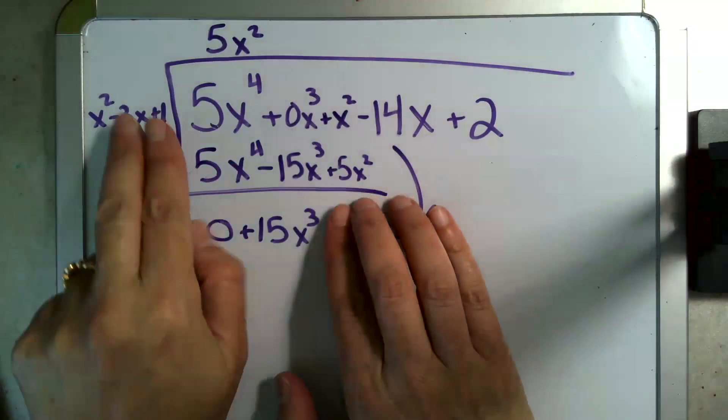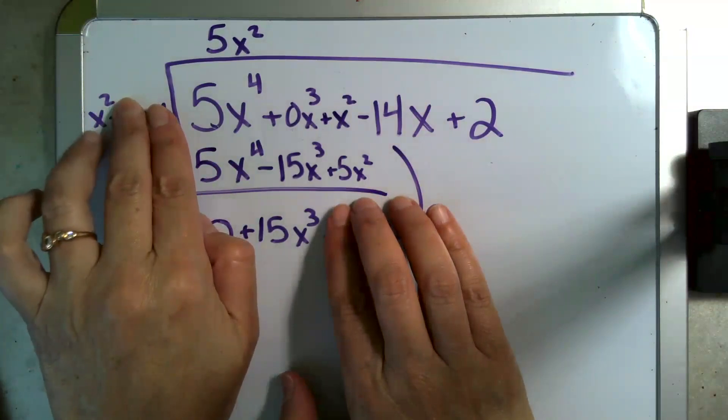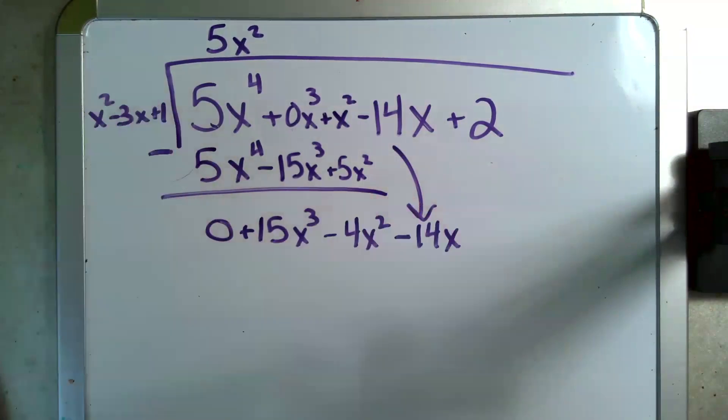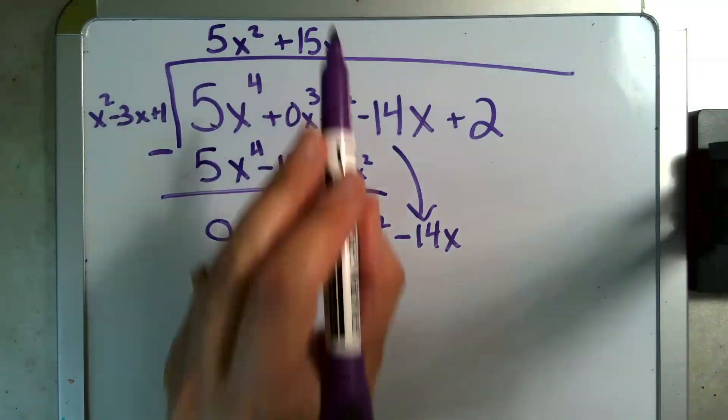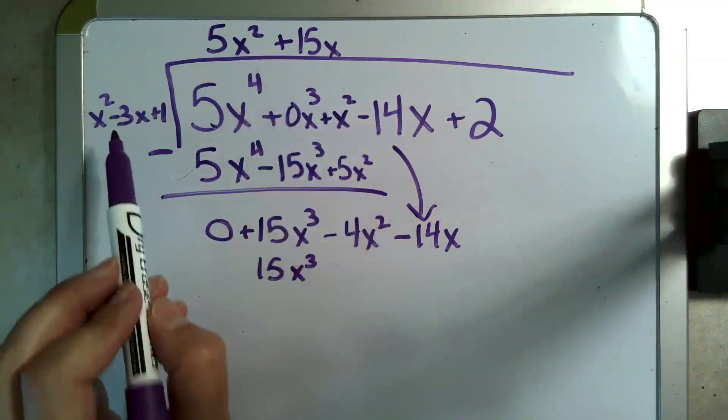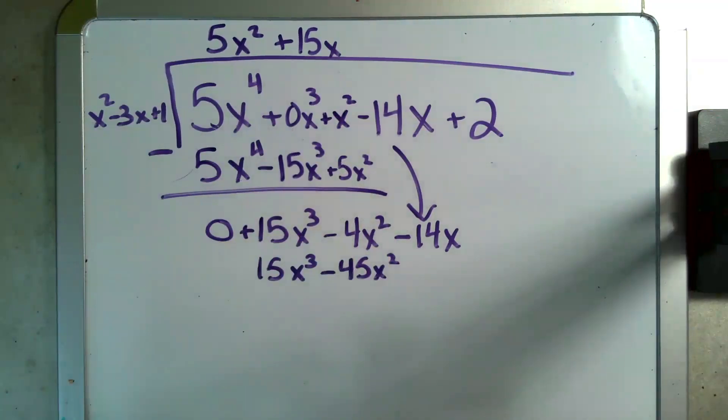I'm covering up this stuff, I'm covering up this stuff. I'm saying what do I multiply x squared by to get 15x to the third? My answer is 15x. I'm going to multiply this through each term. 15x times x squared is 15x cubed. 15x times negative 3x is negative 45x squared. 15x times positive 1 is 15x. And now I'm going to subtract.